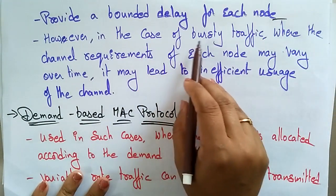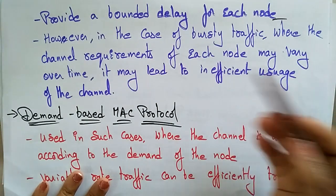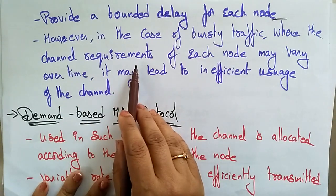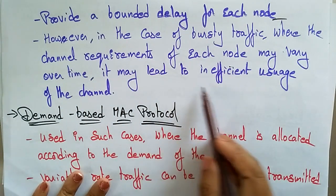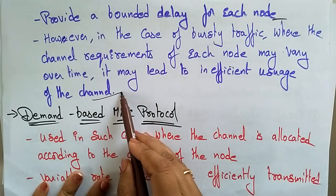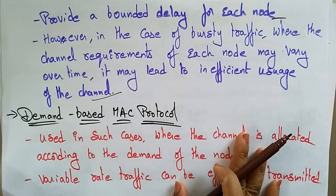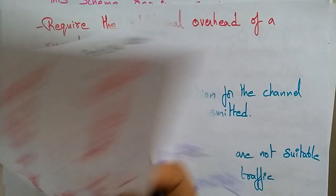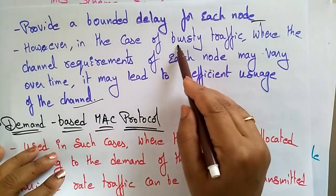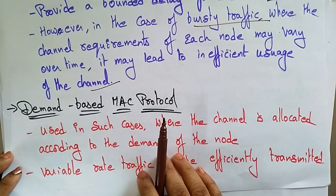However, in the case of bursty traffic, where the channel requirements of each node may vary over time, it may lead to inefficient usage of the channel. So in those cases, the fixed allocation MAC protocol is used, though it is less efficient for variable or bursty traffic scenarios.